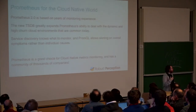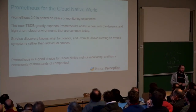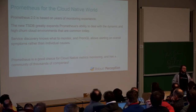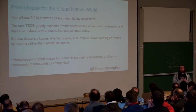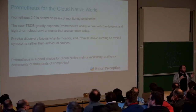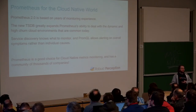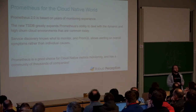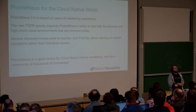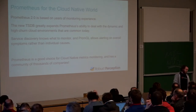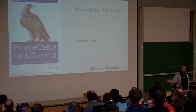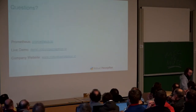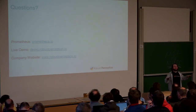Prometheus 2.0, based on years of monitoring experience, has a far more capable time series database. It has grown with service discovery, and PromQL allows you to alert on what you actually care about — not CPU usage being high, but latency being high. Prometheus has a community of thousands of companies, hundreds of exporters, and at least 15 client library languages. I'd also like to announce that I'm presently writing a book about Prometheus, hopefully out in a few months.